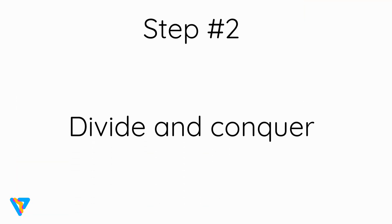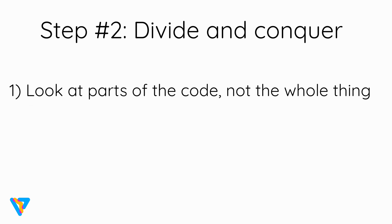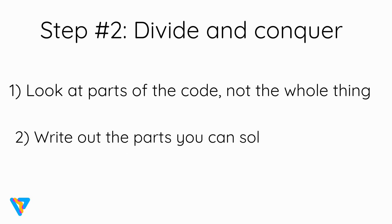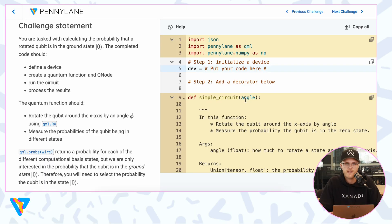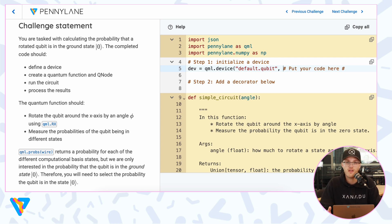Step number two: divide and conquer. In the case of coding challenges on our platform or during Q Hack, it's kind of like a fill-in-the-blanks scenario. We give you some code that you then have to complete. Look at bits and pieces of the code rather than the whole thing, as it can get daunting. Write out parts of the code that you do know how to solve and leave the ones you don't empty for now. For example, I know what a device is in PennyLane — I use qml.device with 'default.qubit' and the circuit is a one-qubit circuit.